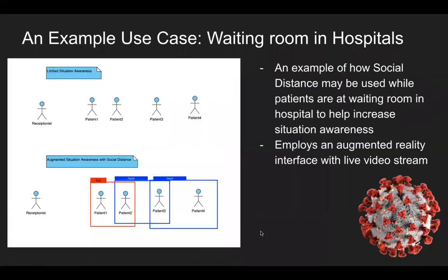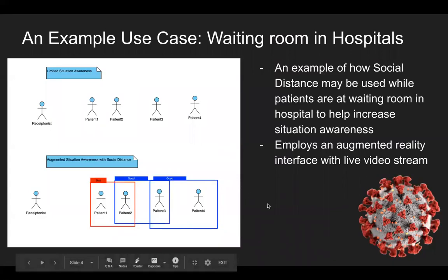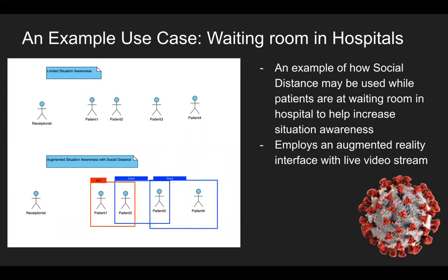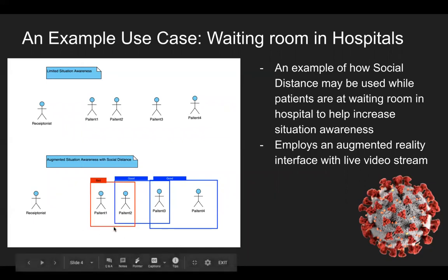An example use case of our application would be a hospital's waiting room. In the image at the left-hand corner, you can see patients waiting in a queue. The receptionist couldn't determine whether they are following safe distance practices because of limited situation awareness. Our social distancing application provides greater situational awareness in such scenarios. With an augmented reality interface combined with the live video stream of our application, we can see whether patients are following a good or bad practice.